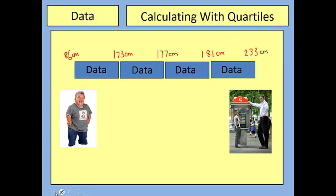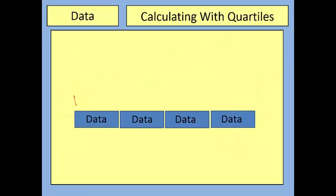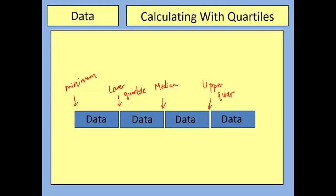These points have special names. The lowest one is obviously the minimum. The point 25% of the way through is called the lower quartile — the word quartile comes from the word quarter, because we've split it into 4 sections. The middle is the median — you might call it the middle or second quartile, but the name you've probably already met is the median. Then we have the upper quartile, because it is a quarter from the top. And at the far end, the maximum value.